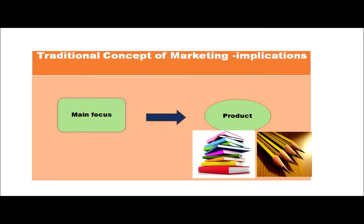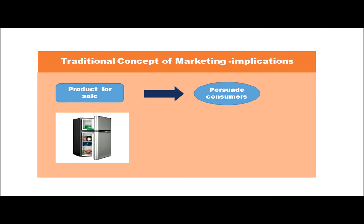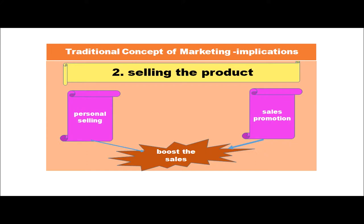In the traditional concept of marketing, the main focus is on the product. Whatever has been produced, that has to be sold. For example, if we have manufactured a refrigerator, production has already happened and we will ensure that by persuading the consumers, we make them buy the product. Selling the product happens through personal selling and sales promotion activities. Personal selling means sending people door to door, having personal interaction, helping consumers understand the new features of the products, clarifying their queries, and helping them to buy the products.